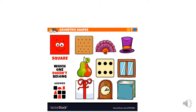We have here some items in a square shape. We also have some items that are a good example of a square shape. What about the window? The window is in a square shape. We also have this cube in a square shape, and this present is also in a square shape.